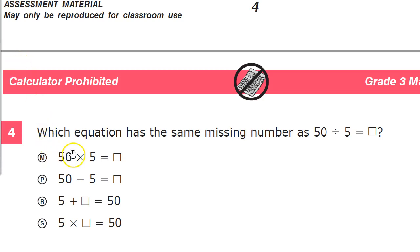So they'll give us some choices down here: 50 times 5, 50 minus 5, 5 plus something, 5 times something equals 50.